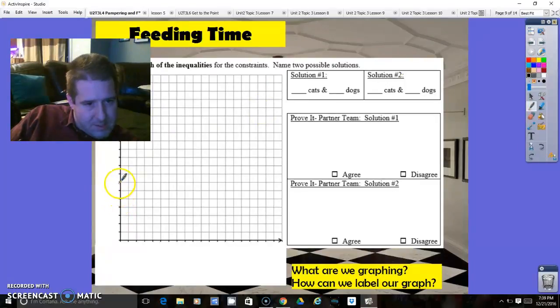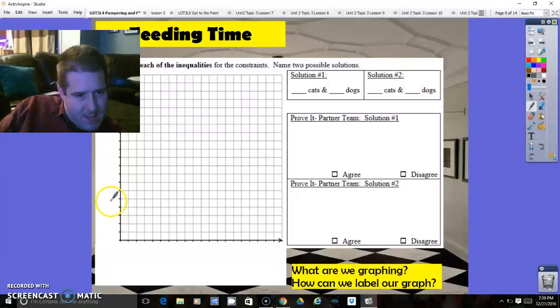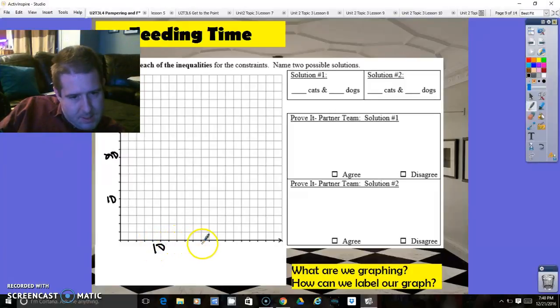Counting up to 20 by ones, it looks like 24 is not going to fit. So what if I go by 2s? Counting by 2s up to 30. So that should work for both axes.